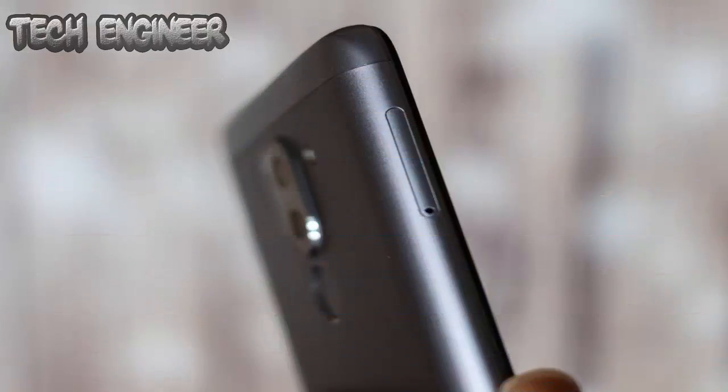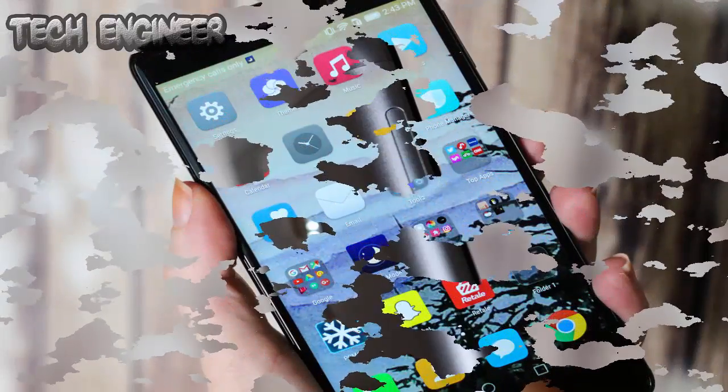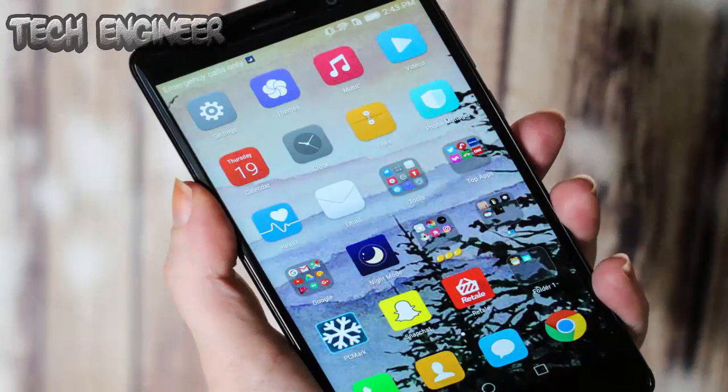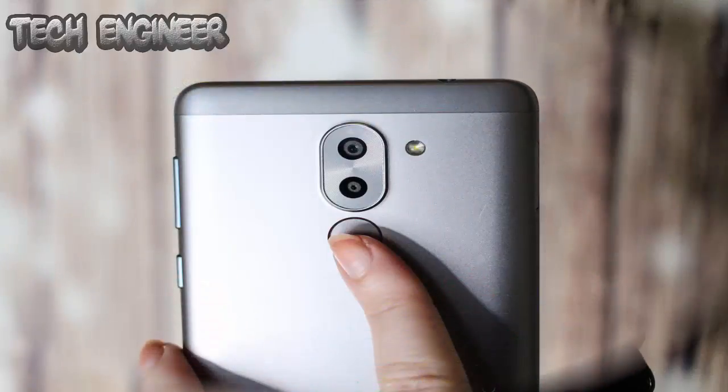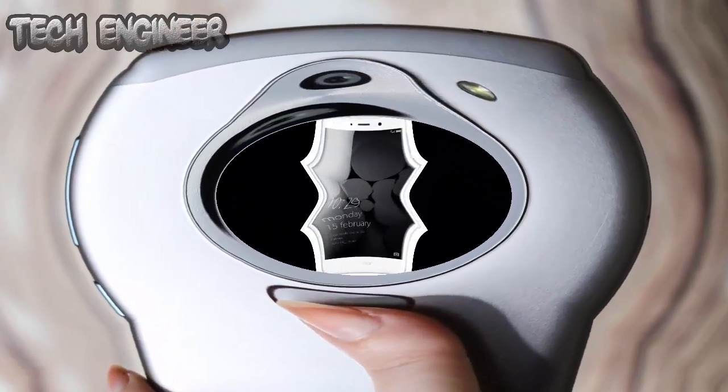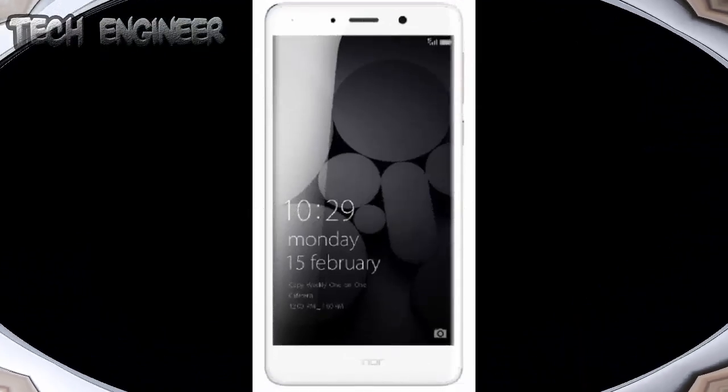There is a 5.5-inch Full HD Sunlight display that offers brightness level up to 450 nits. Just below the camera setup, you can see a fingerprint sensor, that's the best-in-class with a response time of 0.3 seconds.